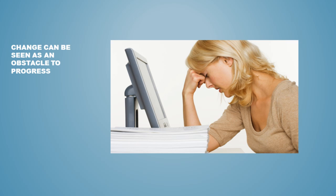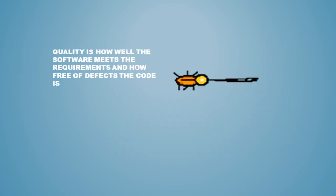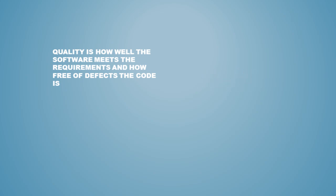In a moment, we will discuss how changes are managed in an agile environment. Quality is how well the software does what it is expected to do, and how free of defects or bugs it is. And there should be traceability from your scope, through your requirements and your design, through development and testing. We'll talk about how agile deals with quality later on.